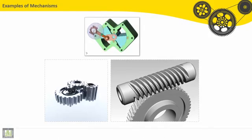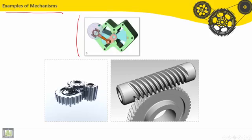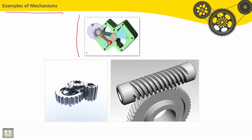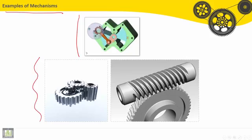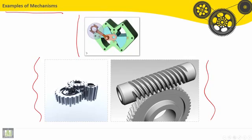We'll continue to present some other examples of mechanisms, and we'll start here by the first example, it is a pump, it is a mechanism. Also here, we have some examples of gears, and here, worm gear. These are mechanisms, or elements of machines.